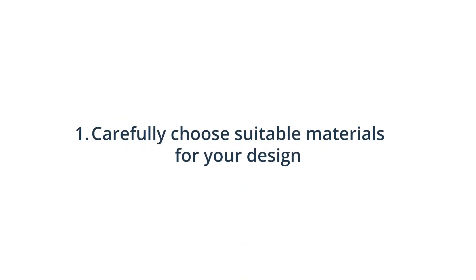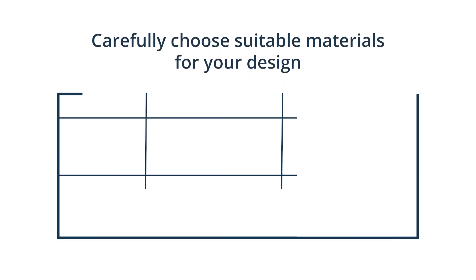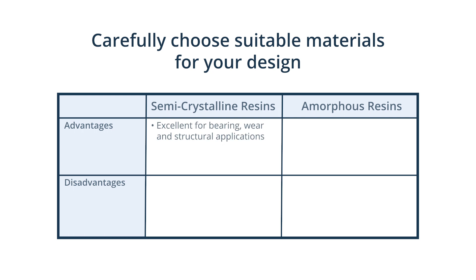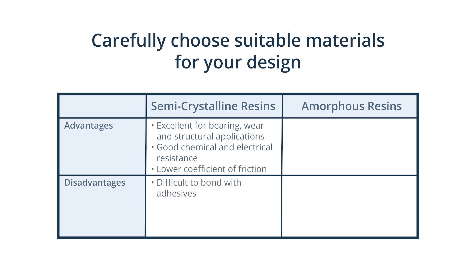1. Carefully choose suitable materials for your design. Thermoplastic resins used for injection moulding fall into two categories that both have their own advantages and disadvantages. Semi-crystalline thermoplastics are excellent for bearing, wear and structural applications, have good chemical and electrical resistance as well as lower coefficient of friction. However, they are difficult to bond with adhesives and their impact resistance is average.